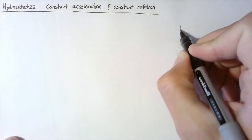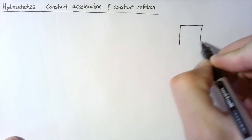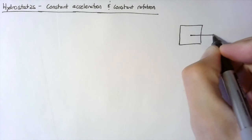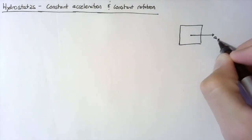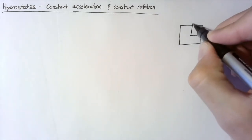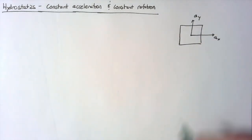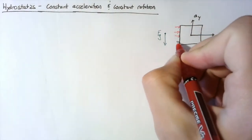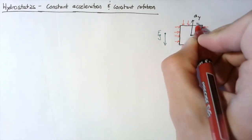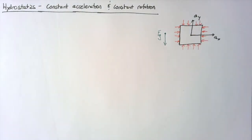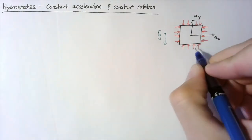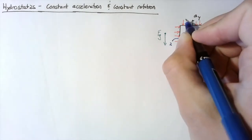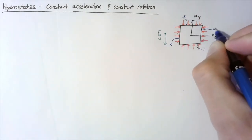We're going to be looking at a differential fluid element again, but for the case of constant acceleration, we're going to say that this has an acceleration in the x direction and in the y direction. We have to deal with the force of gravity and the pressure on these four surfaces. I'm going to label some of the geometry so that we can reference it later — surfaces one, two, three, and four.